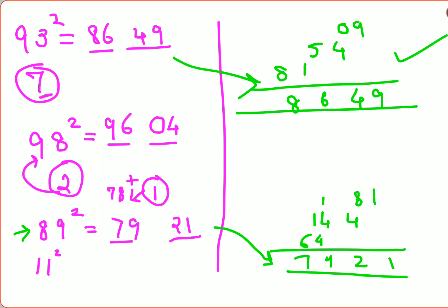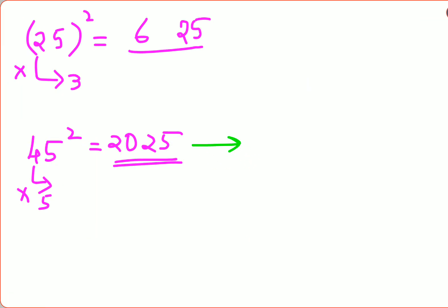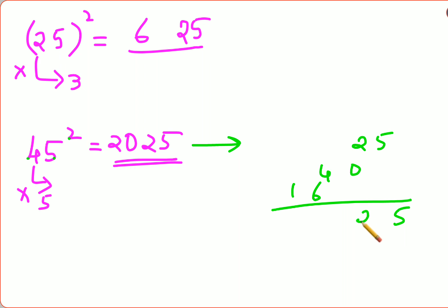Finally, let's verify the numbers-ending-in-5 trick with the universal method using 45 squared: 5 squared is 25, then 4 times 5 times 2 equals 40, then 4 squared is 16. Adding gives 2025. That's it for today — see you in the next video!